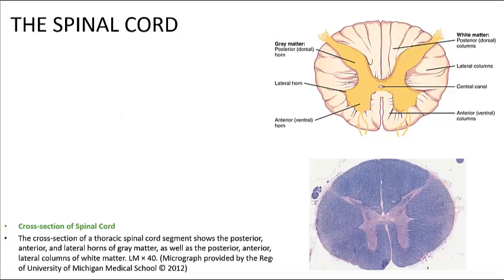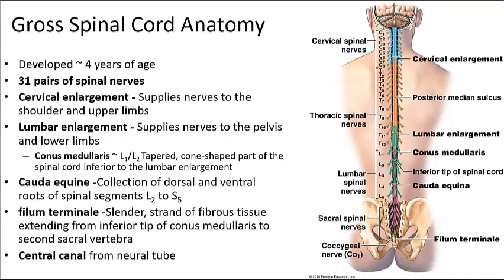The adult spinal cord is about 18 inches in length with a maximum width of approximately 14 millimeters. It is located within the vertebral foramen, also known as the vertebral canal. Key anatomical regions include the cervical enlargement, which supplies nerves to the shoulders and upper limbs; the lumbar enlargement, which provides innervation to the pelvis and lower limbs; and the conus medullaris, the tapered conical portion of the spinal cord inferior to the lumbar enlargement.